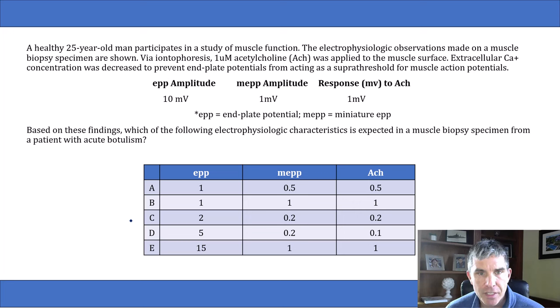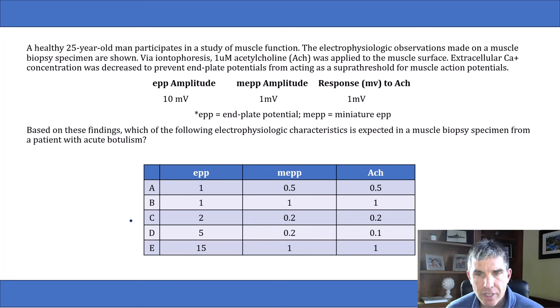The MEPP amplitude is 1. The response to acetylcholine is 1 millivolt. Then they say, based on these findings, which of the following electrophysiologic characteristics is expected in a muscle biopsy specimen from a patient with acute botulism? And we've got a table with a bunch of different EPP, MEPPs, and acetylcholine results.